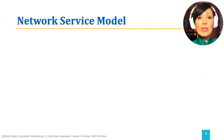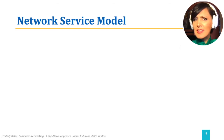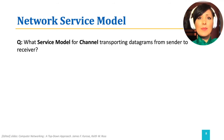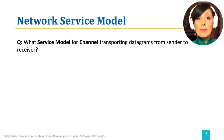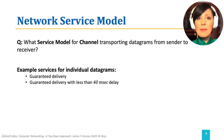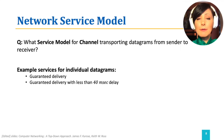When discussing reliable data transport, we discuss it over an unreliable channel. A timely question here is the nature of the channel in the network layer and the service model corresponding to the channel transporting datagrams from sender to receiver. Example services for a single datagram could include guaranteed delivery and guaranteed delivery with bounded delay.